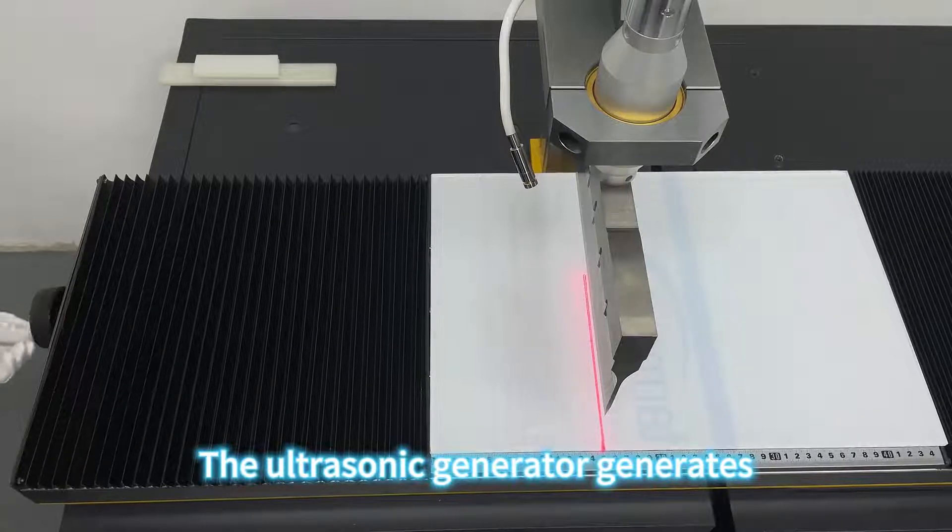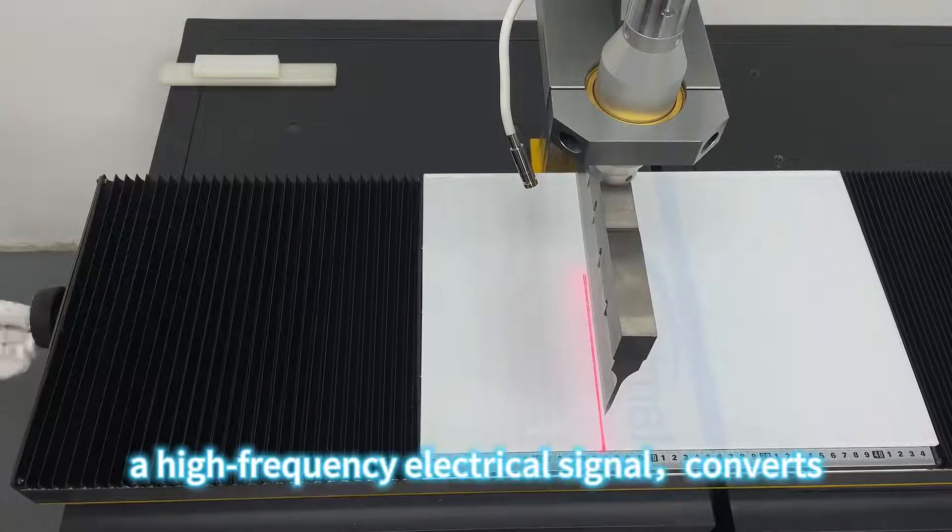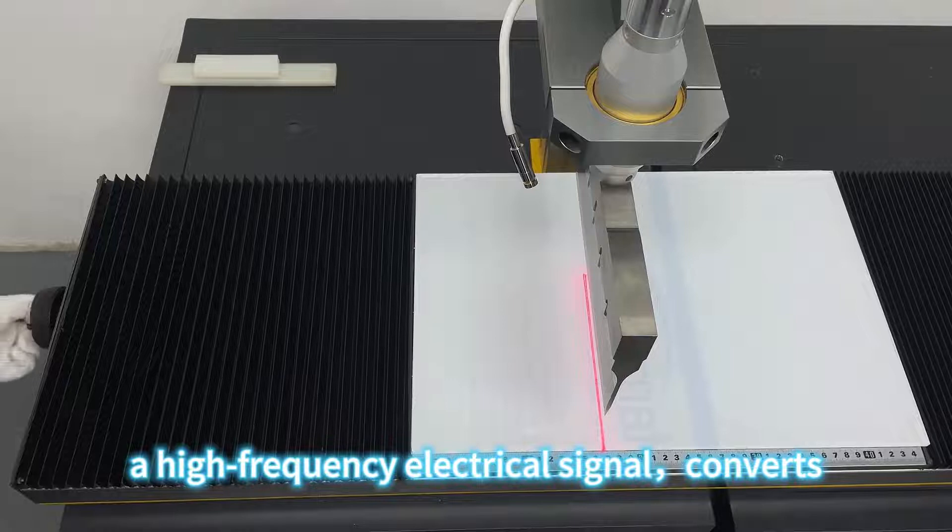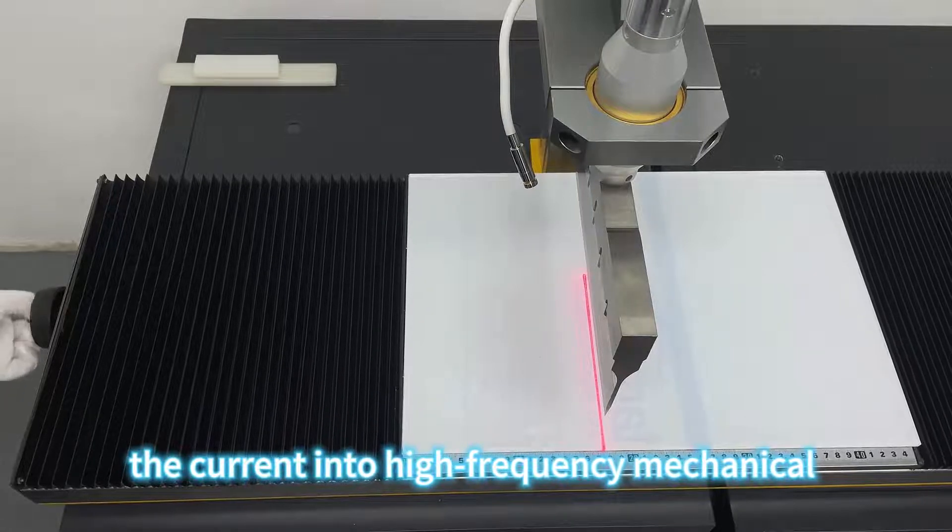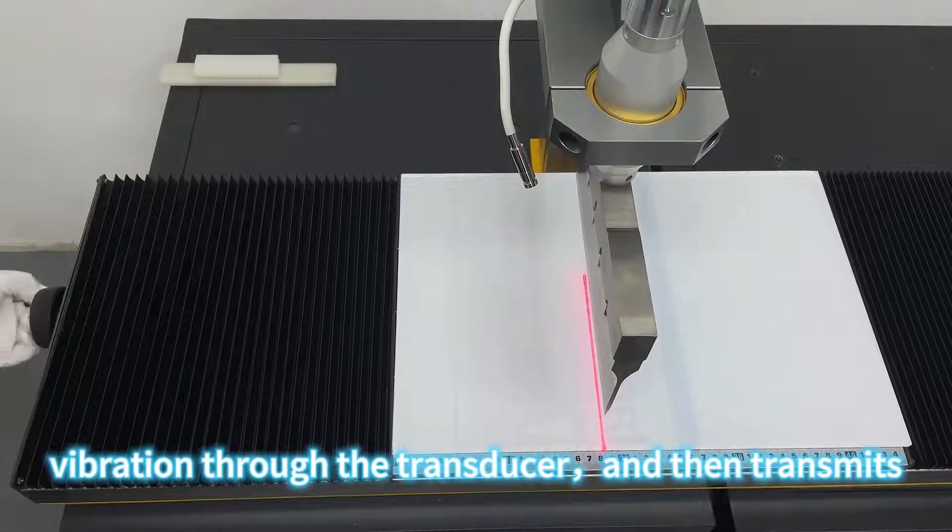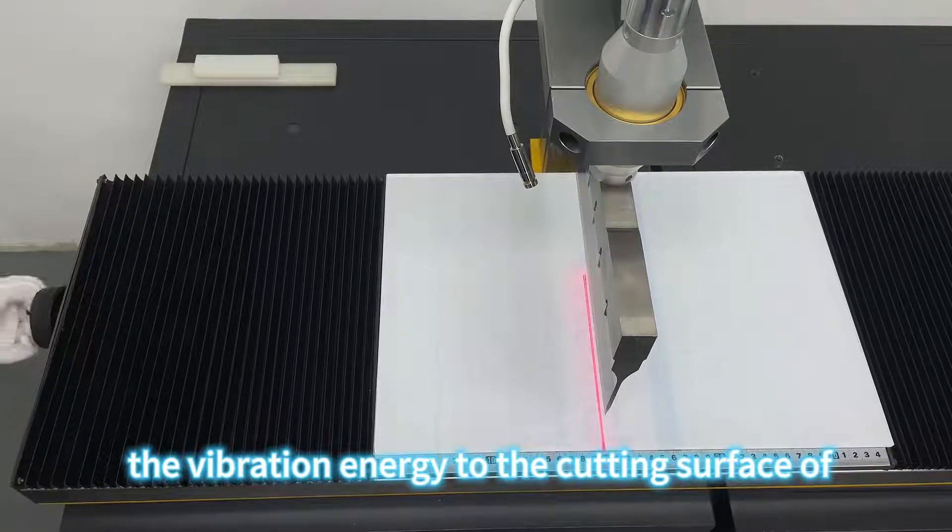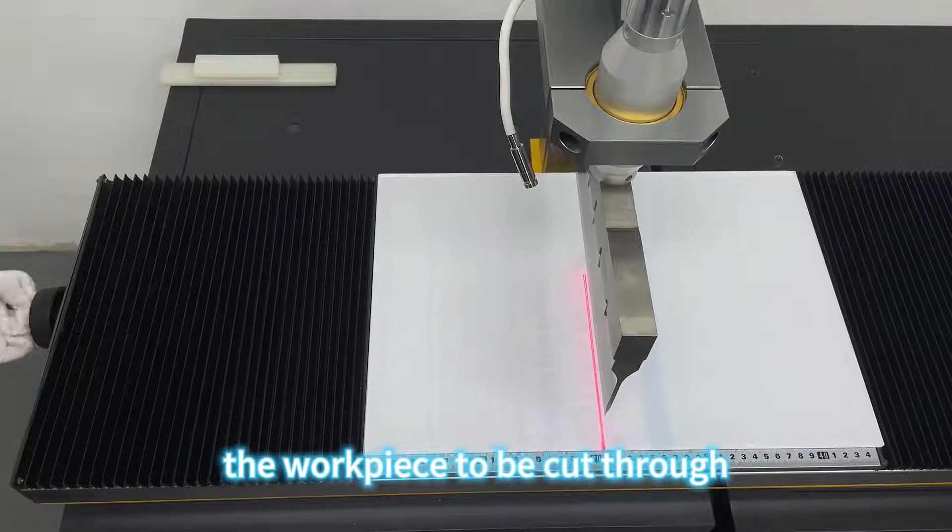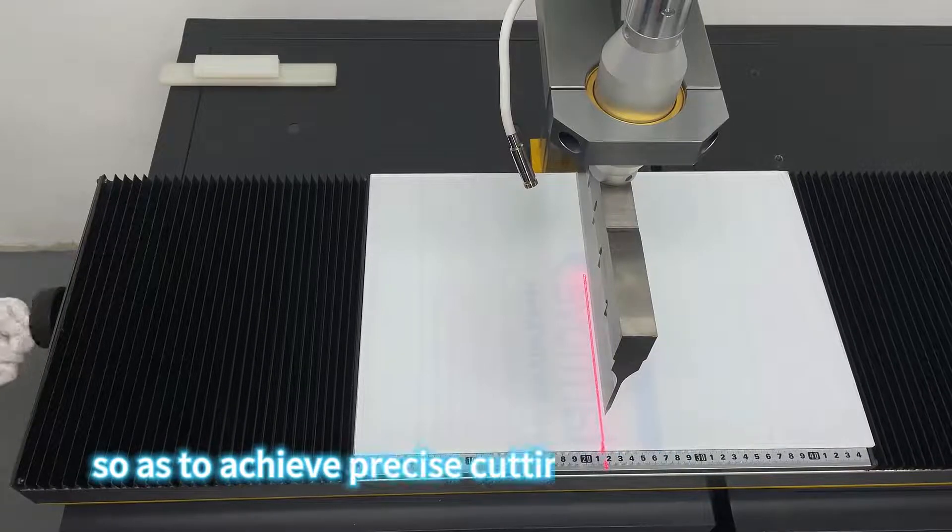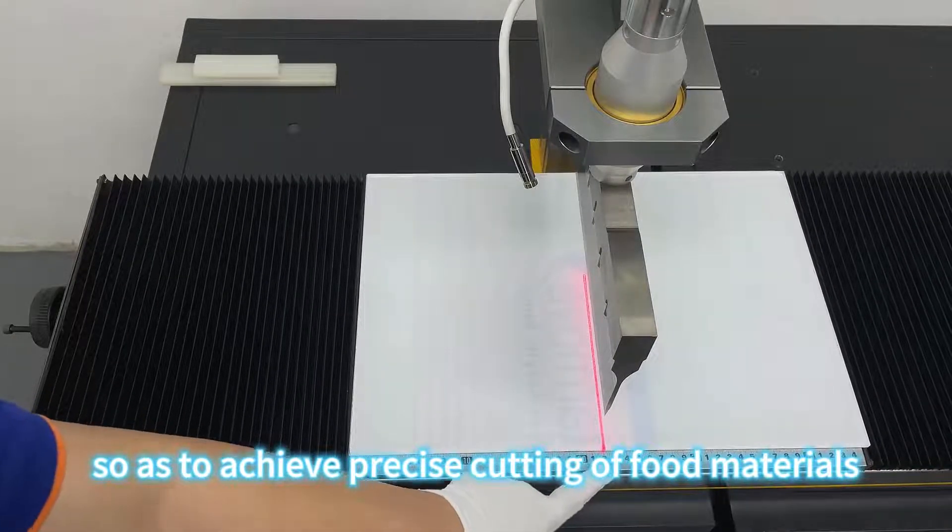The ultrasonic generator generates a high-frequency electrical signal, converts the current into a high-frequency mechanical vibration through the transducer, and then transmits the vibration energy to the cutting surface of the workpiece to be cut through the ultrasonic cutting knife, so as to achieve precise cutting of food materials.